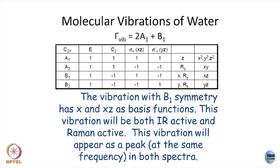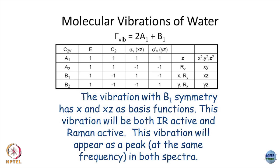What about B1? B1 has x and xz as basis functions, so that vibration will be both infrared active and Raman active. You do see it as a peak in both the Raman spectrum and the infrared spectrum. That is the summary and end of the discrete groups section.